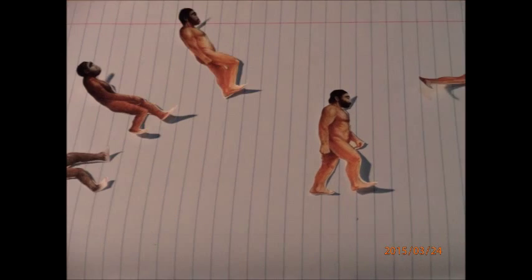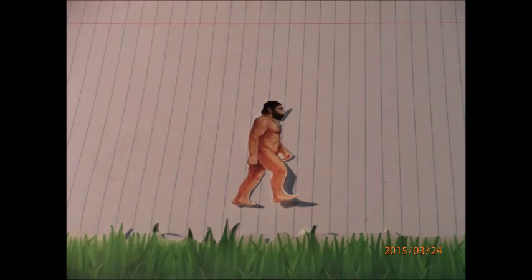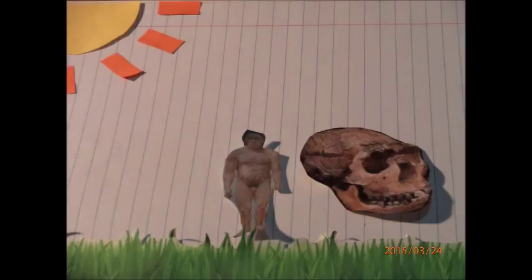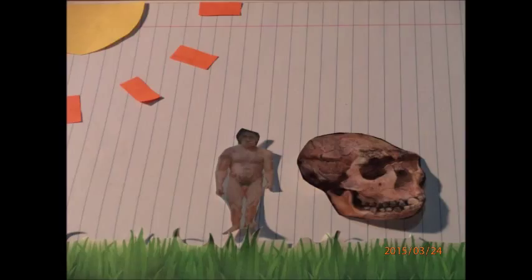Homo neanderthalensis or Neanderthals was the next stage of development and the shortest. Neanderthals are our closest extinct human relative. The most defining features that differed from humans were their cheekbones and huge nose as well as being shorter and bulkier.